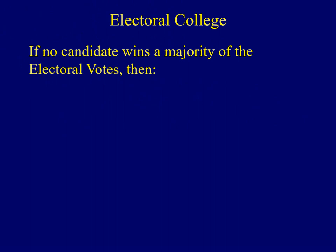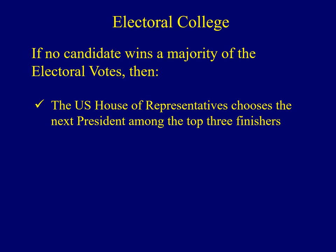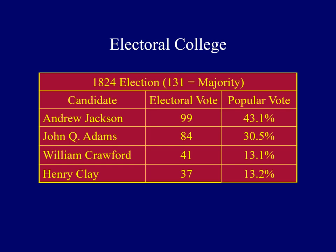Earlier in the lecture, I said that in order to win a presidential election, a candidate must win a majority of electoral votes. What if there are a whole bunch of people who run for president and no one wins a majority? The Constitution has a solution: the United States House of Representatives would pick the next president among the top three finishers in electoral votes.